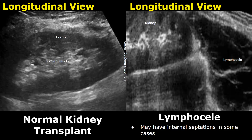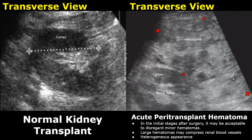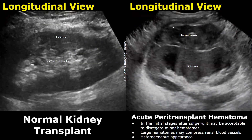Peritransplant hematoma is common in the early postoperative period. Small hematomas can be ignored, but large hematomas are concerning as they may compress renal blood vessels and other renal structures. This is an acute peritransplant hematoma — it usually appears heterogeneous, and the appearance depends on its age. Here is another image of acute peritransplant hematoma; we can see a heterogeneous mass adjacent to the transplant.